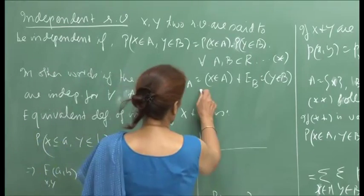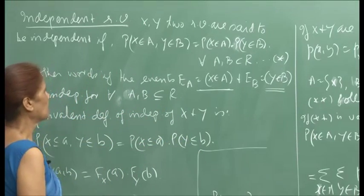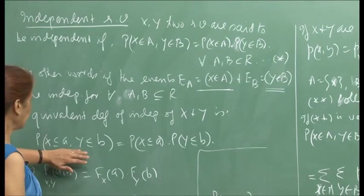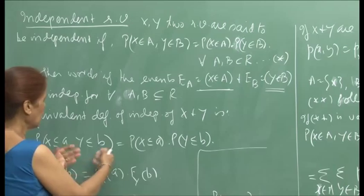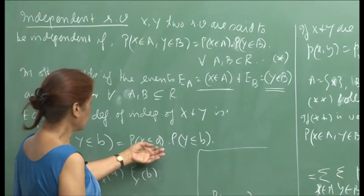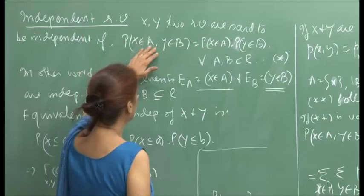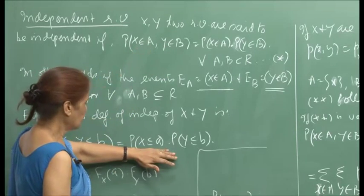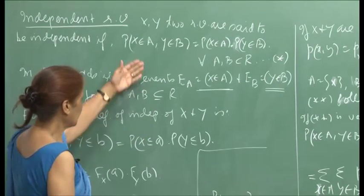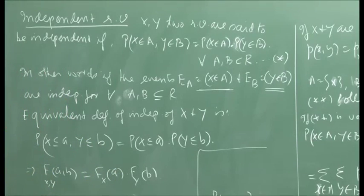In other words, the event that x is in A and the event that y is in B are independent for all A, B subsets of R. An equivalent definition of independence of x and y is that, taking real numbers a and b, the probability that x is less than or equal to a and y is less than or equal to b equals the product of the individual probabilities — and this should hold for all a and b. Using the three axioms, one can show these two definitions are the same.